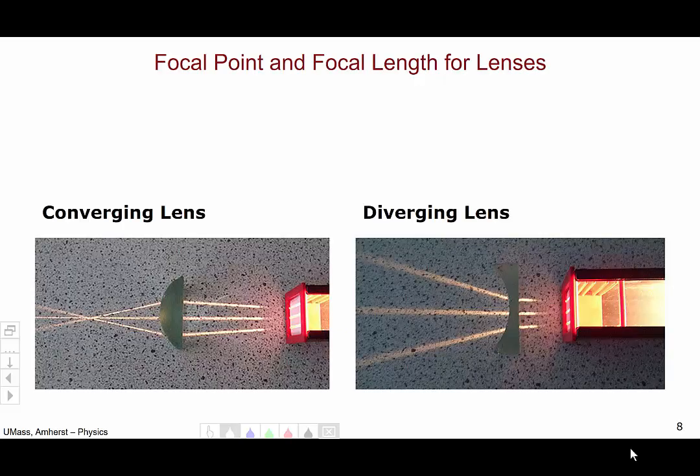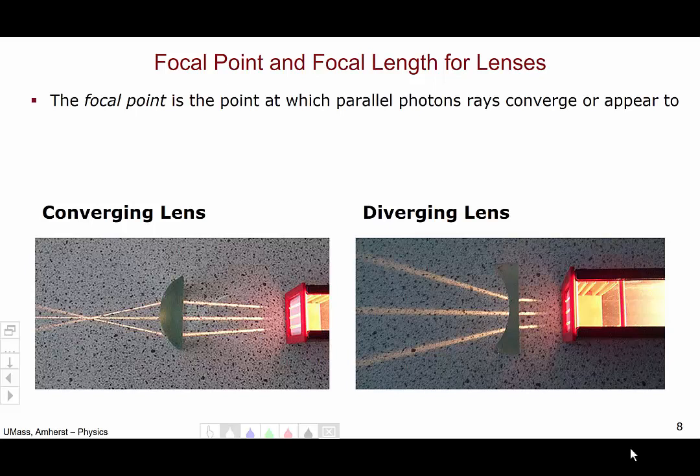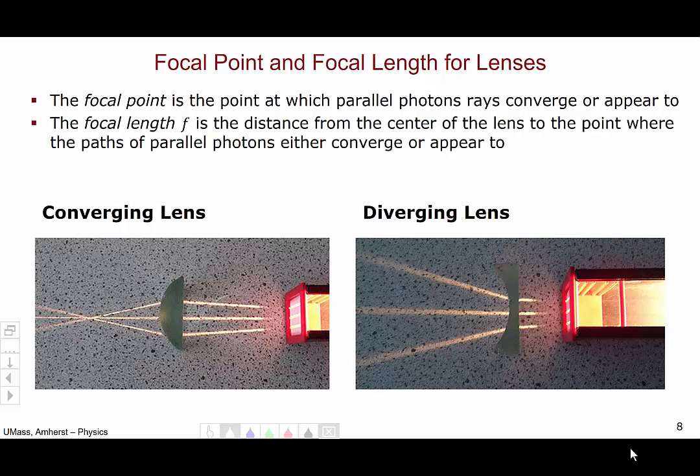So, here's our two lenses, the converging lens on the left and the diverging lens on the right. In both cases, you can see the light coming from the right, passing through the lens on its way to the left. The focal point is defined as the point at which the parallel photons either converge or appear to. Meanwhile, the focal length is the distance from the center of the lens to that point.